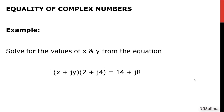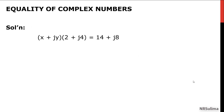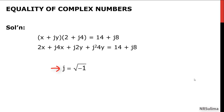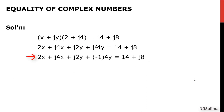To solve this problem, let us go ahead and simplify the left side of the equation. By distribution, we have 2X plus J4X plus J2Y plus J-squared 4Y equals 14 plus J8. We know that J equals the square root of negative 1, therefore J-squared equals negative 1. Replacing J-squared with negative 1, we have 2X plus J4X plus J2Y plus negative 4Y equal to 14 plus J8.